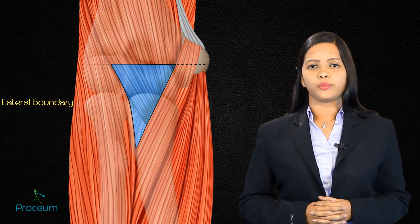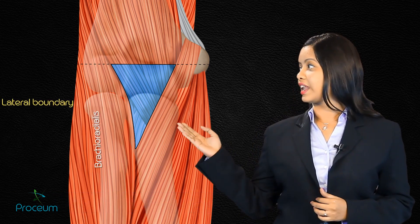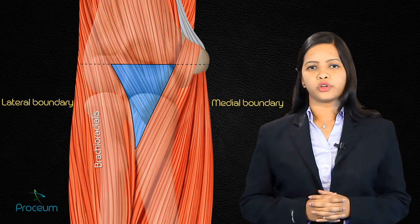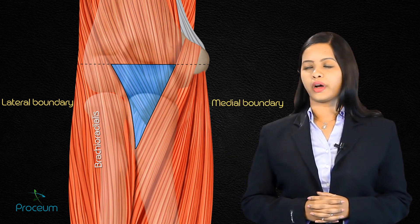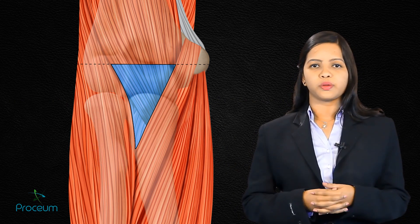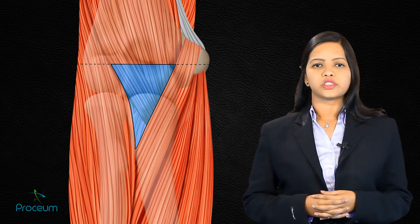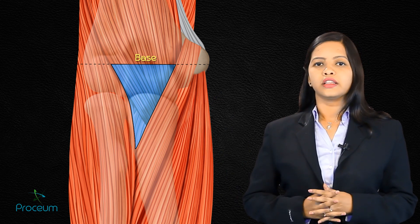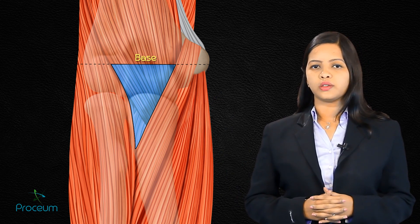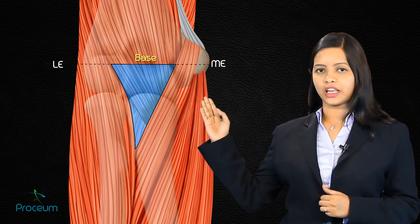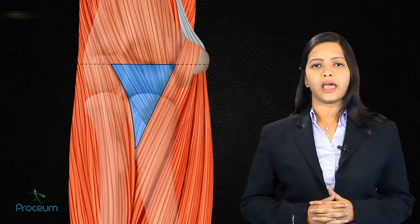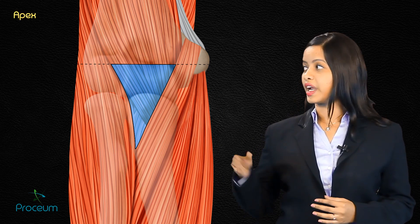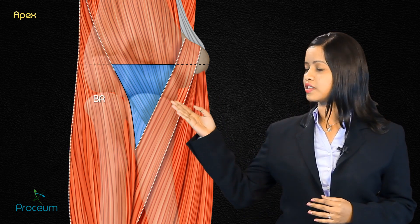The lateral or radial boundary is formed by brachioradialis, and the medial or ulnar boundary is formed by pronator teres. The base of the cubital fossa is formed by an imaginary horizontal line drawn between the lateral and medial epicondyle of the humerus. The apex is formed where brachioradialis crosses the pronator teres muscle.